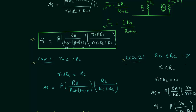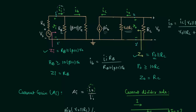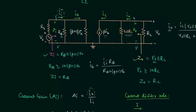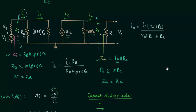In this presentation we will find out voltage gain and overall voltage gain. Voltage gain is defined as the ratio of output voltage to the input voltage. It is represented by A subscript V.